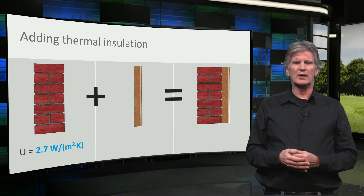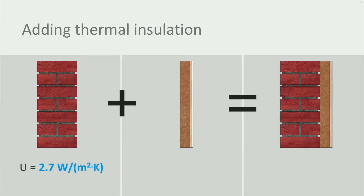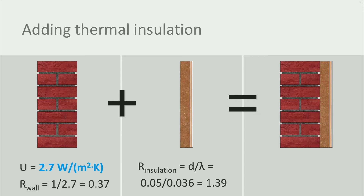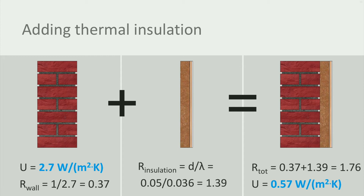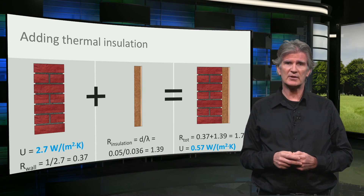Let us look at an uninsulated wall and see what happens if we add a layer of thermal insulation. The U-value of the uninsulated 20 cm thick masonry wall is 2.7, so the total thermal resistance is 1 divided by 2.7, which is 0.37. A 50 mm layer of mineral wool insulation has a thermal resistance of 1.39, so the total thermal resistance becomes 1.76. This results in a U-value for the insulated wall of 0.57.